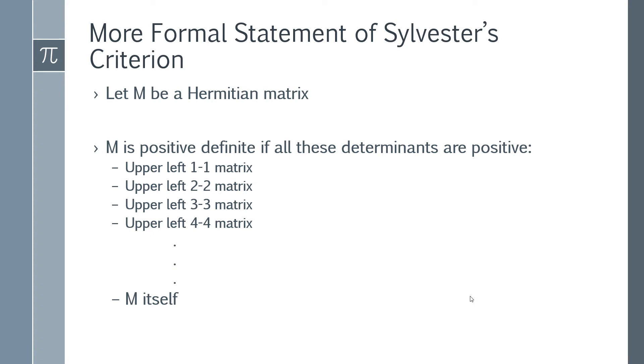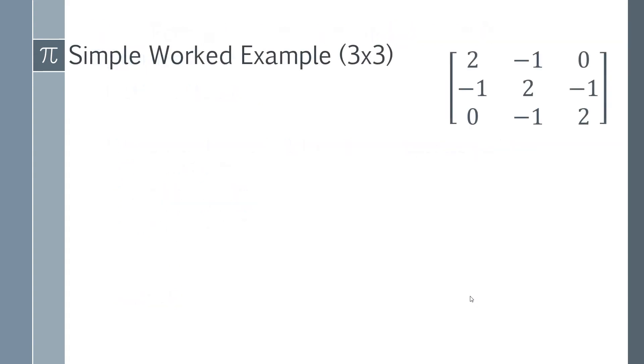If any one of these is not greater than zero, then Sylvester's criterion has not been satisfied and you don't have a positive definite matrix. So let's look at a simple worked example. So we've got a three by three system here and we're going to apply step by step Sylvester's criterion and check whether this matrix is positive definite or not.